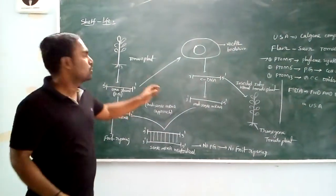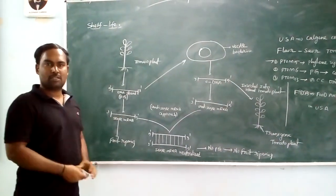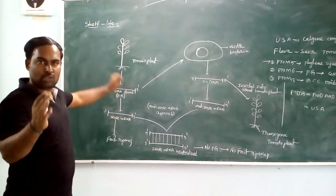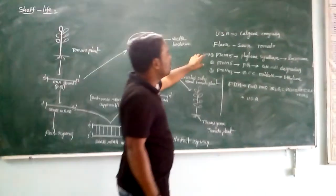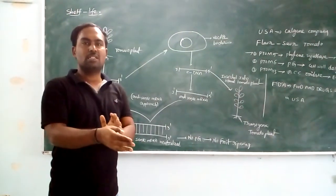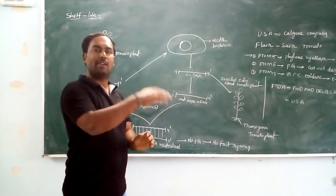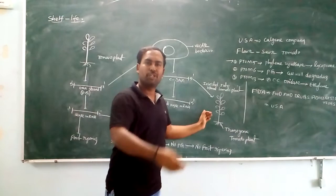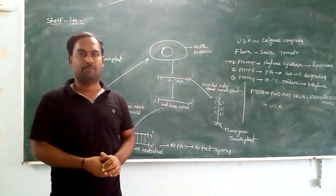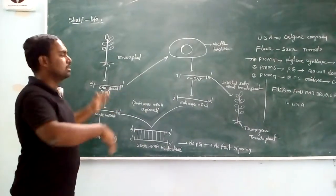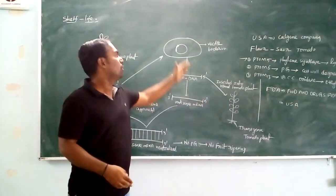First we select the normal tomato plant. In this tomato plant we isolate three genes: Ptom5, Ptom6, and Ptom13. These three genes isolated from tomato plant are inserted into another tomato plant through a vector. Automatically the tomato plant will be converted into a transgenic tomato plant.